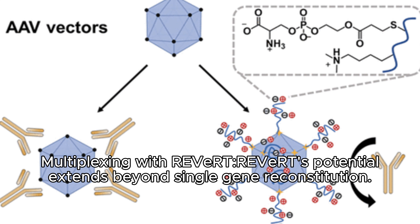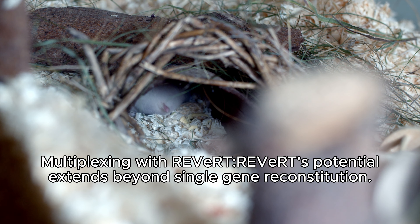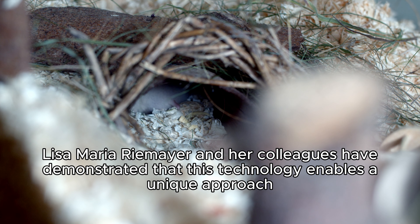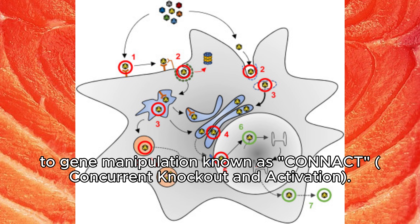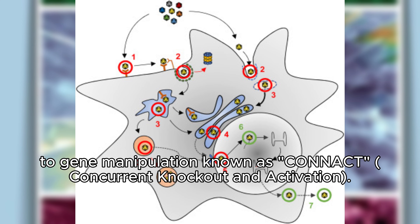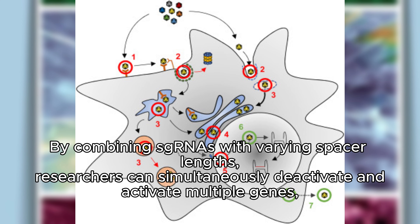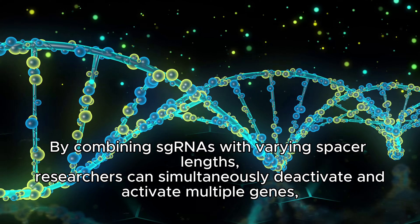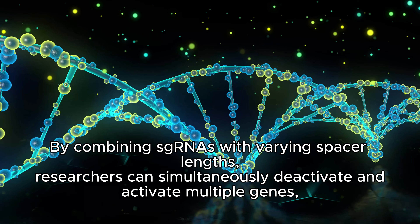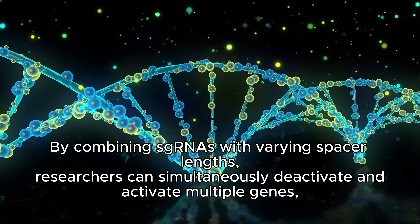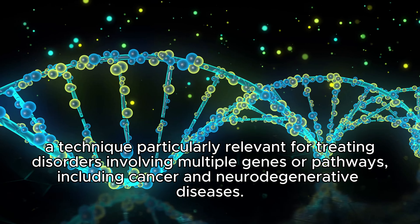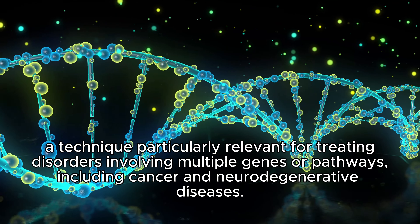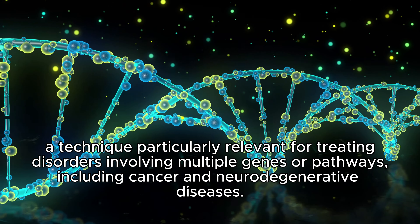Multiplexing with REVRT: the potential extends beyond single gene reconstitution. Researchers have demonstrated that this technology enables a unique approach to gene manipulation known as CONACT — concurrent knockout and activation. By combining sgRNA constructs with varying spacer lengths, researchers can simultaneously deactivate and activate multiple genes — a technique particularly relevant for treating disorders involving multiple genes or pathways, including cancer and neurodegenerative diseases.